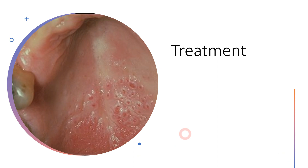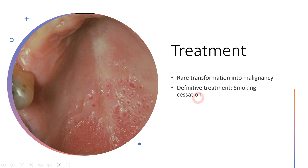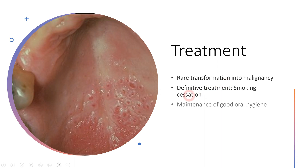Moving on to how we actually treat patients suffering from nicotinic stomatitis — the treatment is quite straightforward. Malignancy in cases of nicotinic stomatitis is very rare, but if smoking is not stopped it can lead to malignancy as well. The definitive treatment is simply smoking cessation. You have to stop smoking so that these chronically irritated lesions can get a chance to heal. The only treatment to give the patient is asking them to stop smoking, and lastly instruct the patient to maintain good oral hygiene.